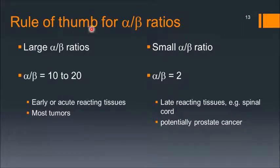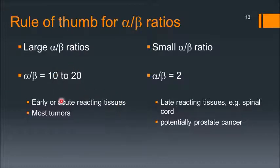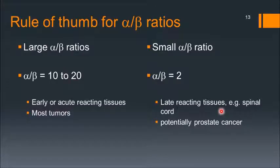As a rule of thumb for alpha/beta ratios: large alpha/beta ratios of approximately 10 to 20 correspond to early or acutely reacting tissues and most tumors. Small alpha/beta ratios of about 2 or 3 correspond to late reacting tissues — for example, spinal cord and potentially prostate cancer.